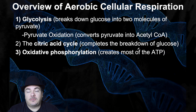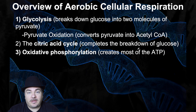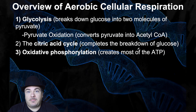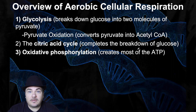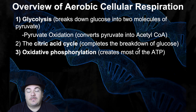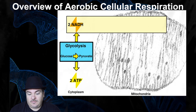The citric acid cycle, which is the second main stage, will complete the breakdown of what started out as glucose all the way down to carbon dioxide molecules, releasing all of its energy. But you haven't made much ATP yet. So then you have the third main stage, oxidative phosphorylation, which is made up of the electron transport chain and chemiosmosis, and that's where you make the vast majority of your ATP.